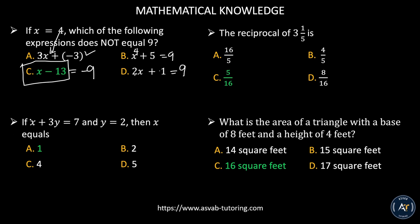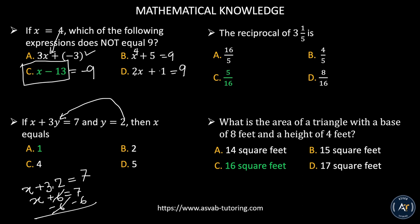If x plus 3y equals 7 and y equals 2, then x equals what? Substitute y equals 2: x plus 3 times 2 equals 7, so x plus 6 equals 7. Subtract 6 from both sides: x equals 1. The correct answer is letter A.